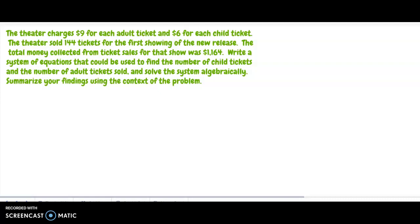Okay, so it says the theater charges nine dollars for each adult ticket and six dollars for each child ticket. The theater sold 144 tickets for the first showing of the new release and the total money collected from ticket sales for that show was 1164 dollars. Write a system of equations that could be used to find the number of child tickets and the number of adult tickets sold and solve the system algebraically. Summarize your findings using the context of the problem.